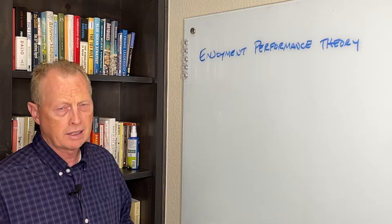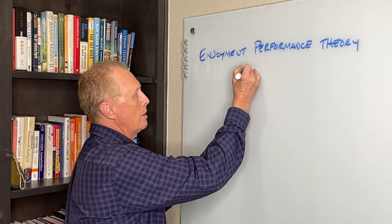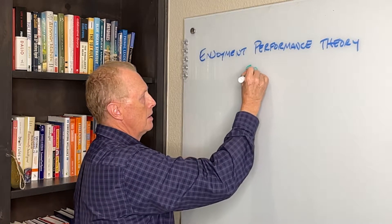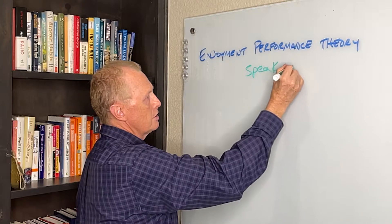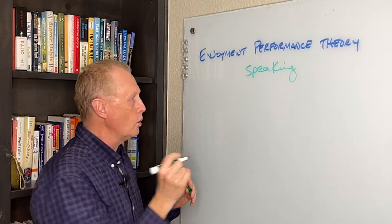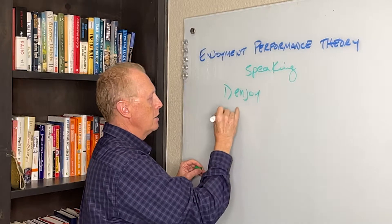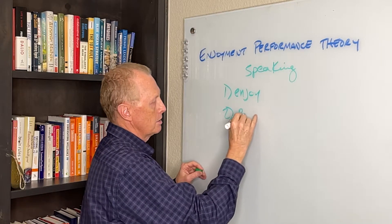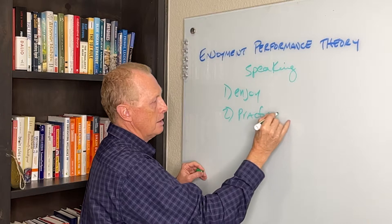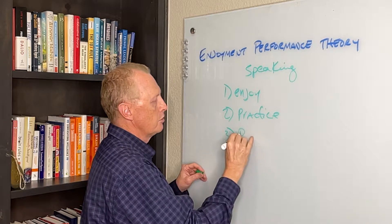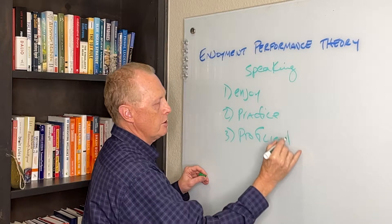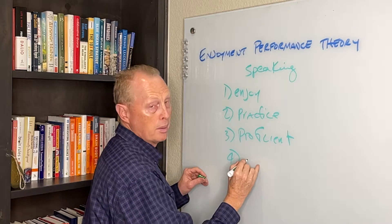Let's pretend that we're going to talk about public speaking. Enjoyment Performance Theory simply means if I enjoy doing something, I do more of it, so I practice. If I practice, I become proficient. If I become proficient, I get compliments.